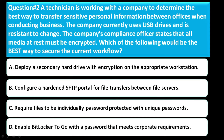Question number two: a technician is working with a company to determine the best way to transfer sensitive personal information between offices when conducting business. The company currently uses USB drives and is resistant to change. The compliance officer states that all media at rest must be encrypted. Which of the following would be the best way to secure the current workflow? Option A: deploy a secondary hard drive with encryption on the appropriate workstations. Option B: configure a hardened SFTP portal for file transfers between file servers. Option C: require files to be individually password protected with a unique password. Option D: enable BitLocker to Go with a password that meets corporate requirements. The correct answer is option D — enable BitLocker to Go with the password that meets corporate requirements.